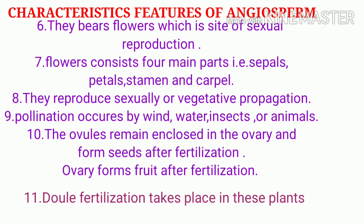In these plants, double fertilization occurs. Two polar nuclei and one male gamete fuse together. After triple fusion, a triploid nucleus is formed from which endosperm develops. After syngamy, a zygote is formed, from which the embryo develops.